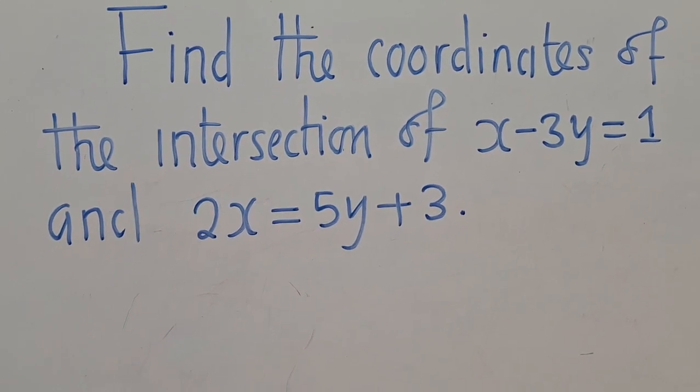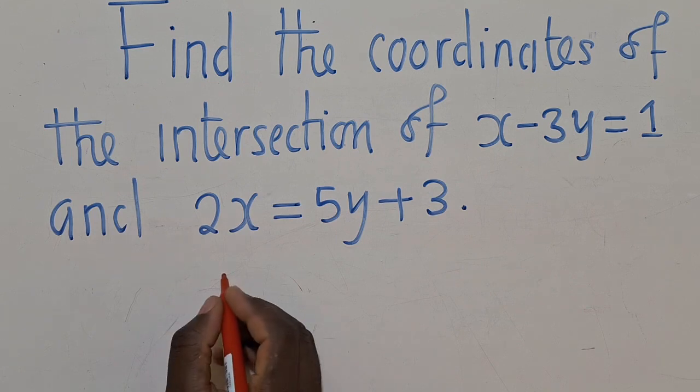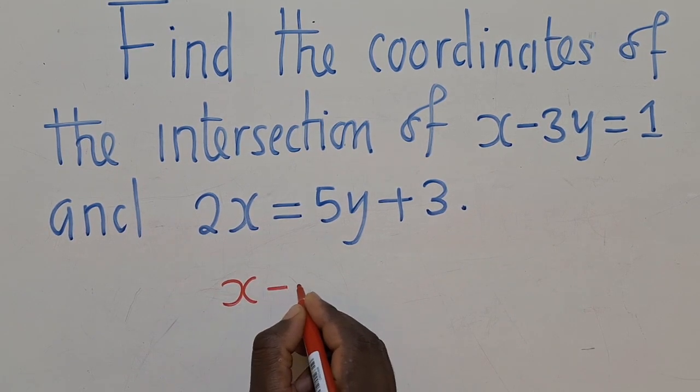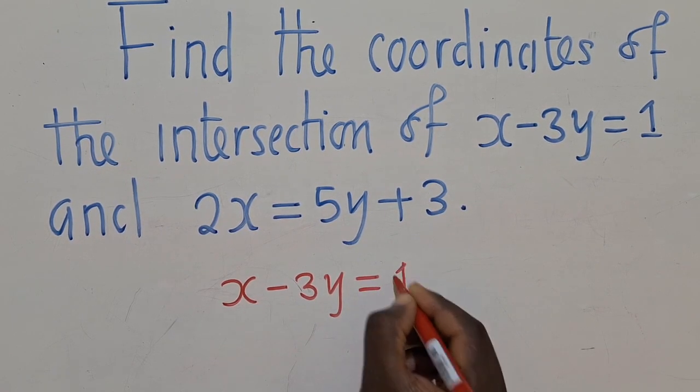So the first thing will be to pick one of the lines, so I'll go with this one. I will say, okay, x minus 3y is equal to 1.